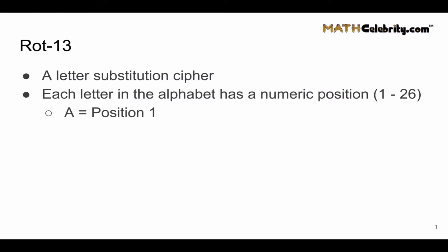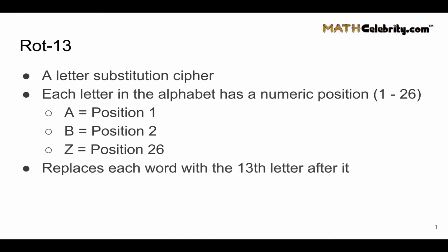Well, each letter in the alphabet has a numeric position 1 through 26. A is at position 1, B is at position 2 because it's the second letter, Z is the last position at position 26. ROT means we're rotating, so we figure out the current position of your letter and we're going to rotate it 13 positions afterwards. And that's how you get ROT13.